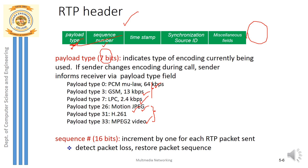Next is the sequence number field, which is 16 bits long and is helpful in finding missing RTP packets. The third field is the timestamp, which takes up 32 bits. This 32-bit timestamp field is used for overcoming jitter and achieving synchronization between sender and receiver. The receiver fixes a playout schedule based on the timestamp attached by the sender, which helps overcome jitter at the receiver end.